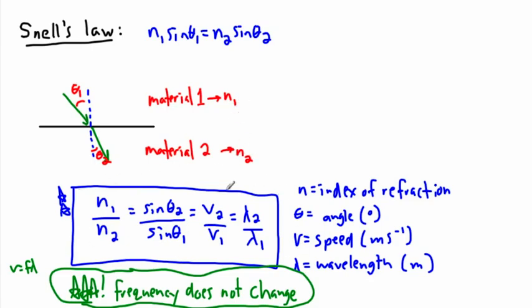What's useful here is you can use just one part of the equation. For example, if you only know the indices of refraction and want to find speeds, just say n1 over n2 equals v2 over v1. There are four quantities and you use whichever ones you need. Next, we're going to go over an example to see Snell's Law in action.